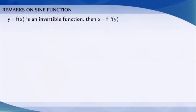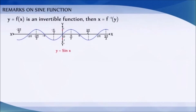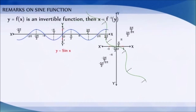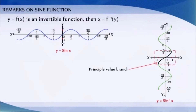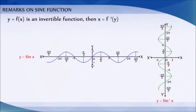If y = f(x) is an invertible function, then x = f⁻¹(y). Thus, the graph of sine inverse can be obtained from the graph of the original function by interchanging its x and y axes. These are the graphs of y = sin x and its inverse y = sin⁻¹(x). The dark portion of the graph of y = sin⁻¹(x) represents the principal value branch. The graph of an inverse function can be obtained from the corresponding graph of the original function as a reflection along the line y = x.